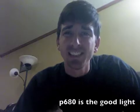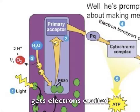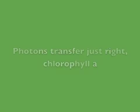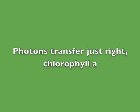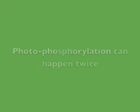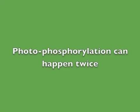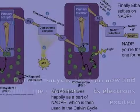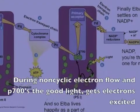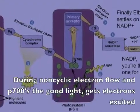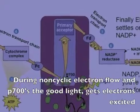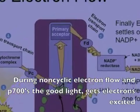P680 absorbs good light, electrons get excited, photons transfer — just right — chlorophyll A. Photophysical reactions happen at photosystem 2. I'm tracking the electron flow. P700 absorbs good light, electrons excited again.